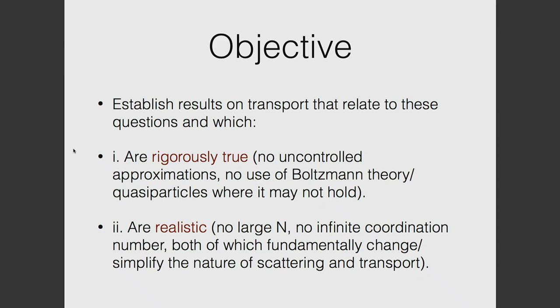The objective for today is to establish theoretical results on transport relating to these questions. I want to set some rules: I'd really like to prove something, meaning I don't want to make any uncontrolled approximations. I also don't want to use Boltzmann theory and quasiparticles — I have nothing against Boltzmann theory, but it's conceivable it doesn't apply to some of these materials. Secondly, I'd like to be as realistic as possible — no large N, no infinite coordination numbers as in DMFT — because both of these things fundamentally change the nature of scattering.